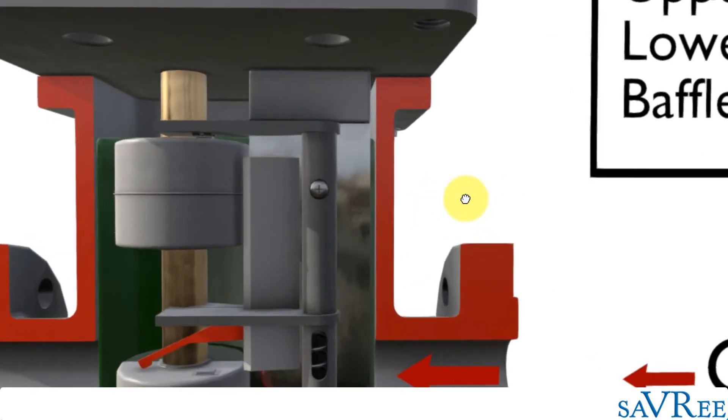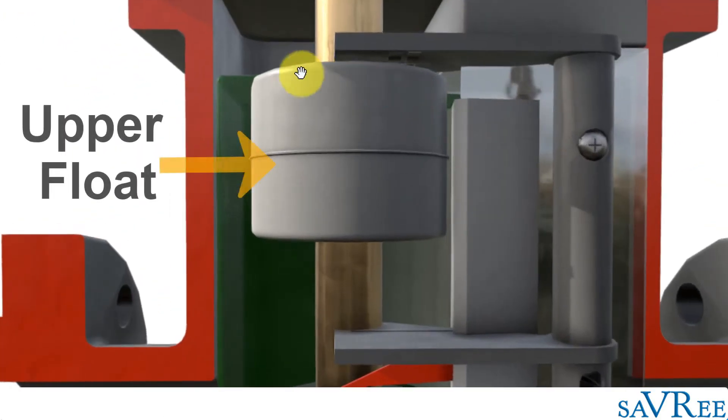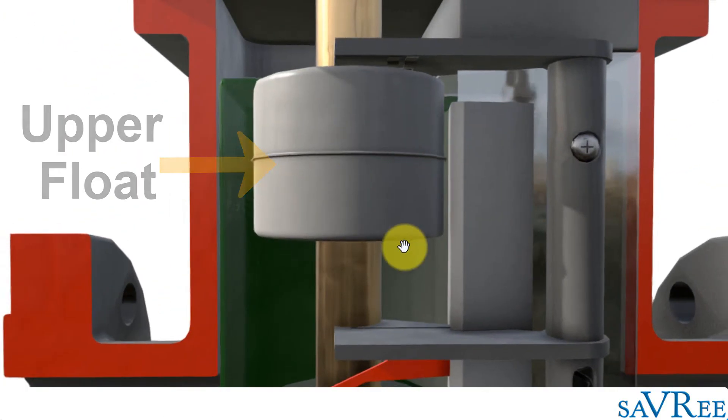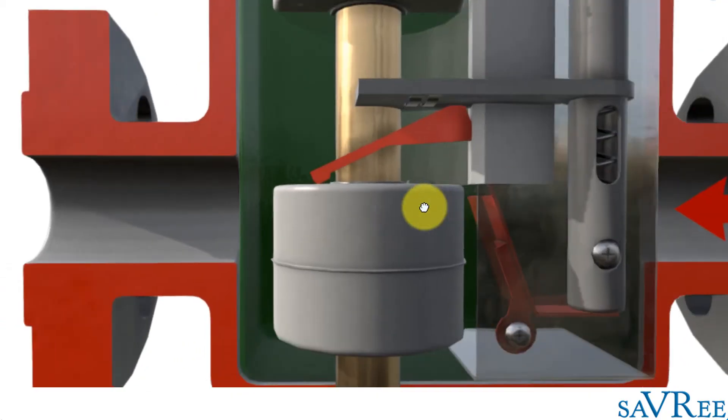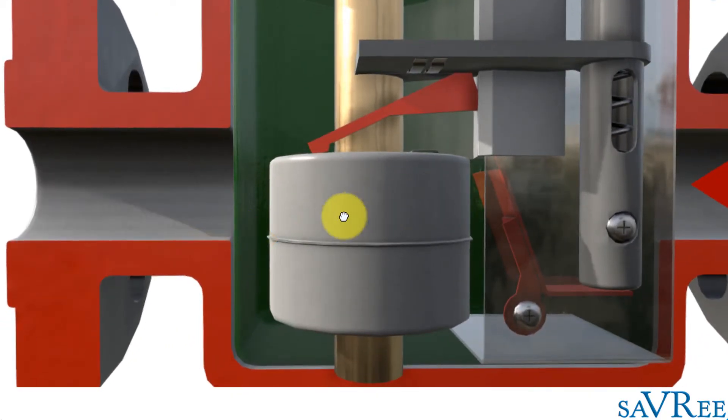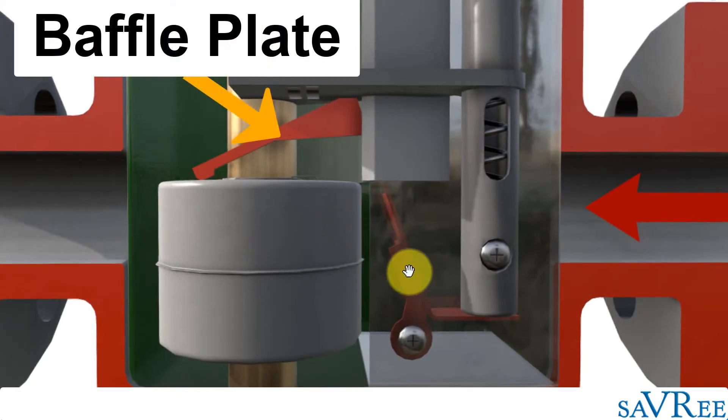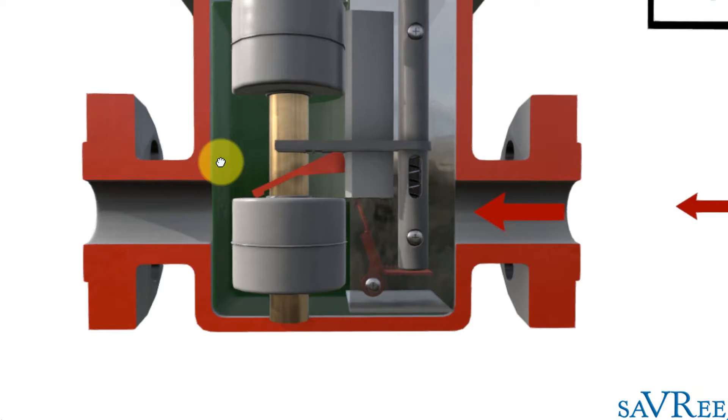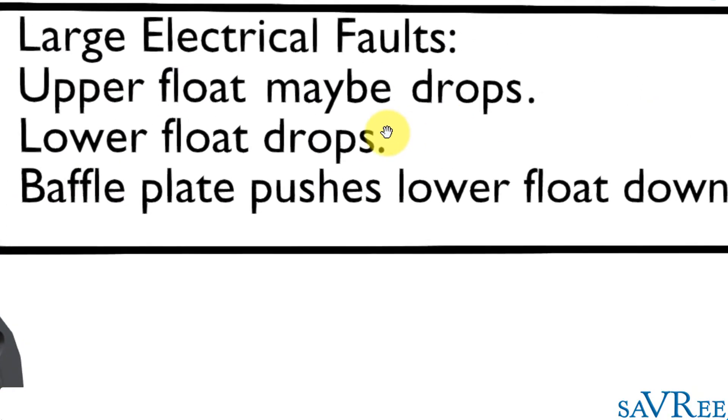Let's have a look how the Buchholz relay protects against this type of situation. We've got an upper float, which is this one here. We've got a lower float, which is this one here. And then we've got a baffle plate, which is this red thing pushing the lower float down here.